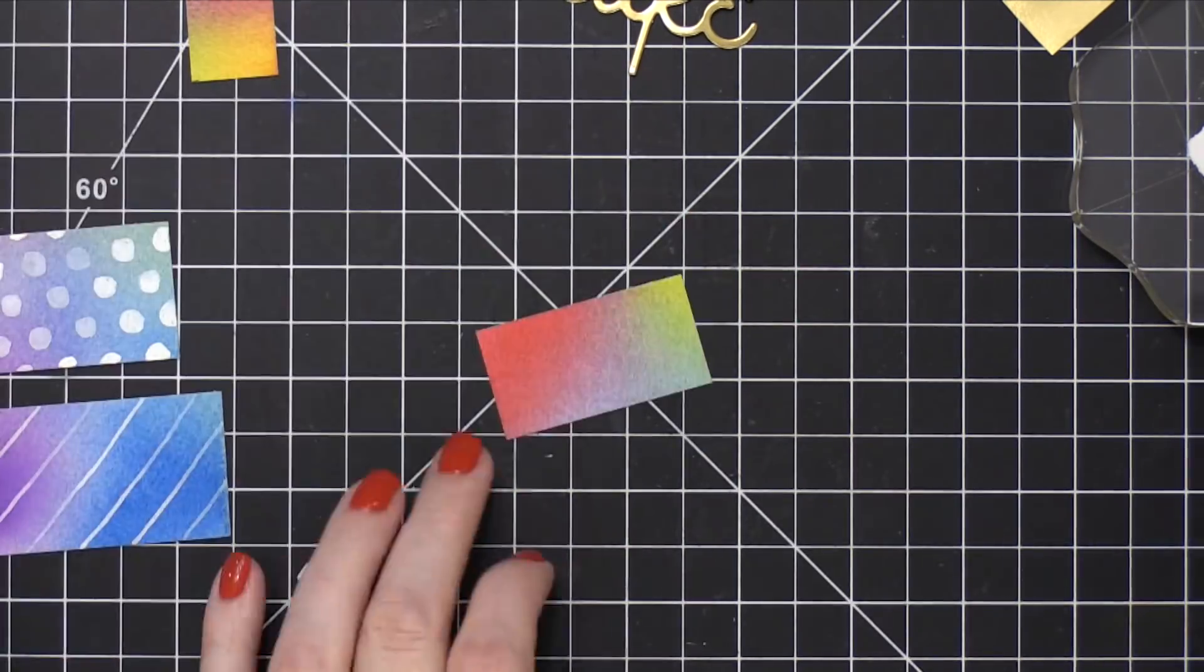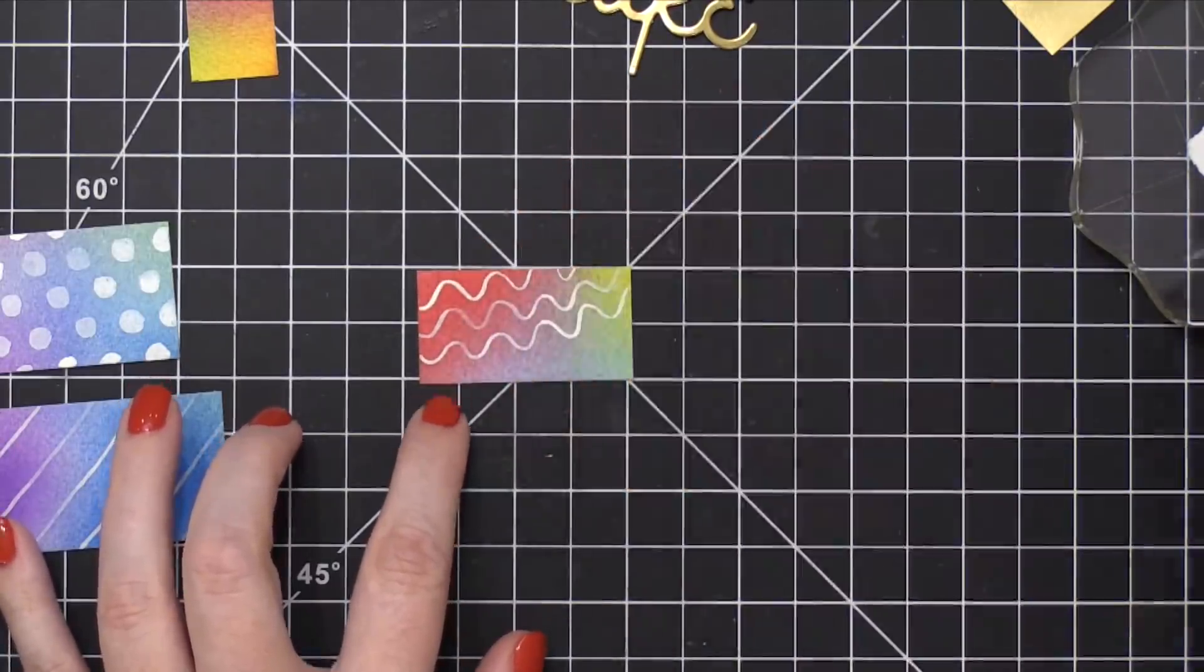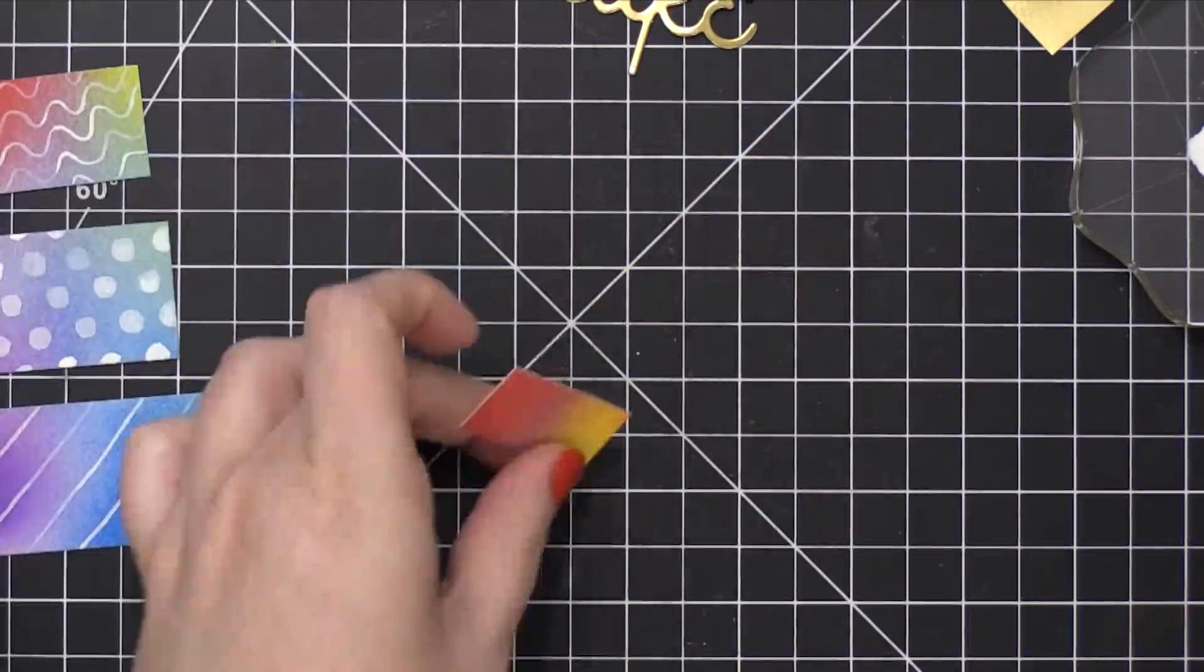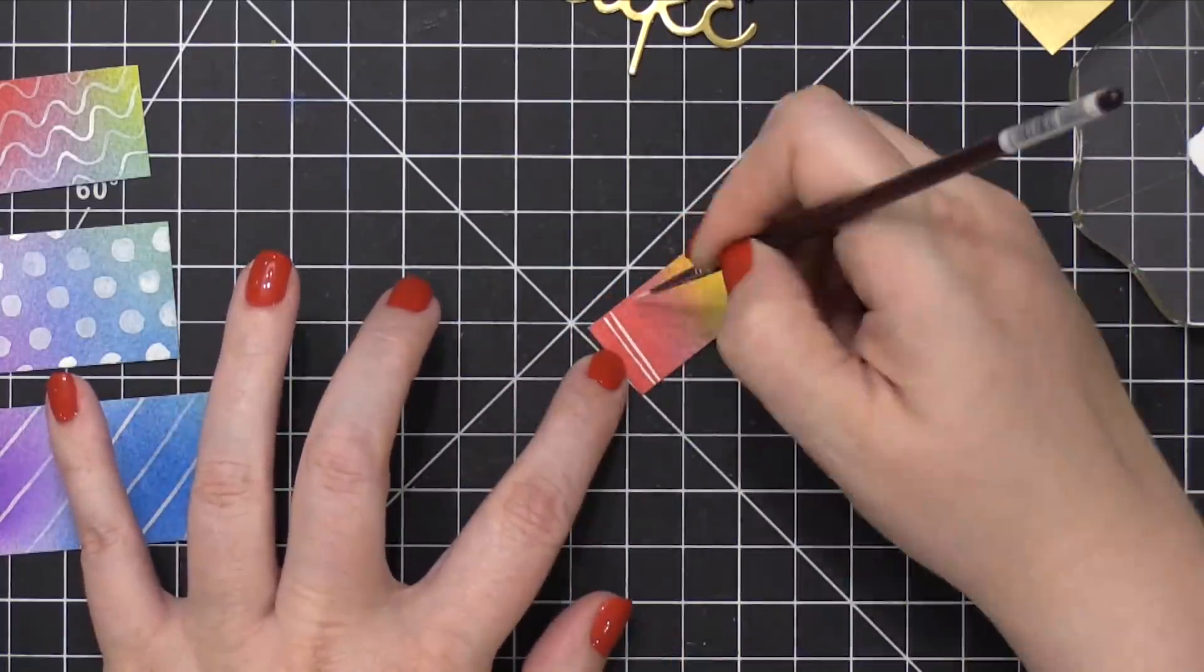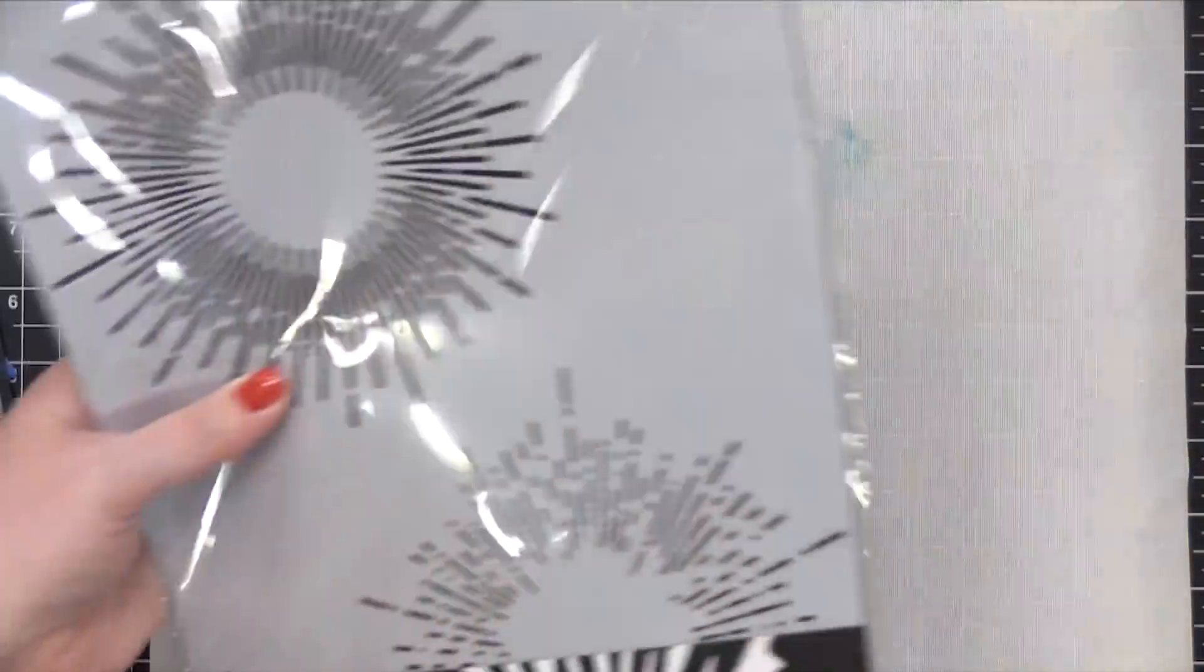The third layer up, I did some squiggly lines. And I had them going a little bit in a diagonal fashion, going all the way across. And for the top layer, I did double lines and then added some decorative dots to the side.